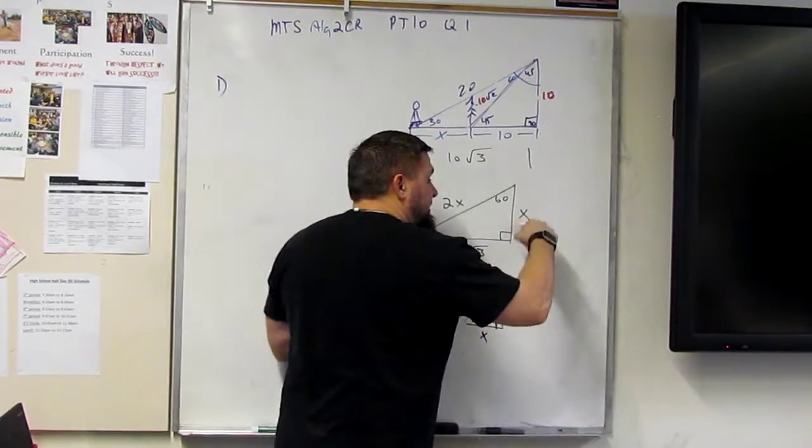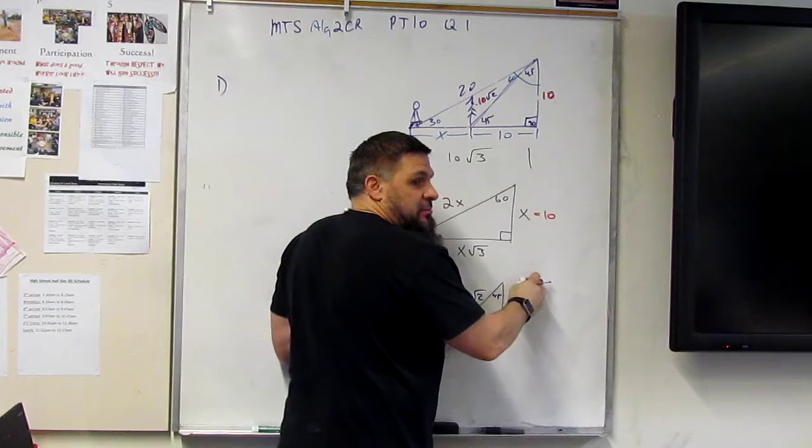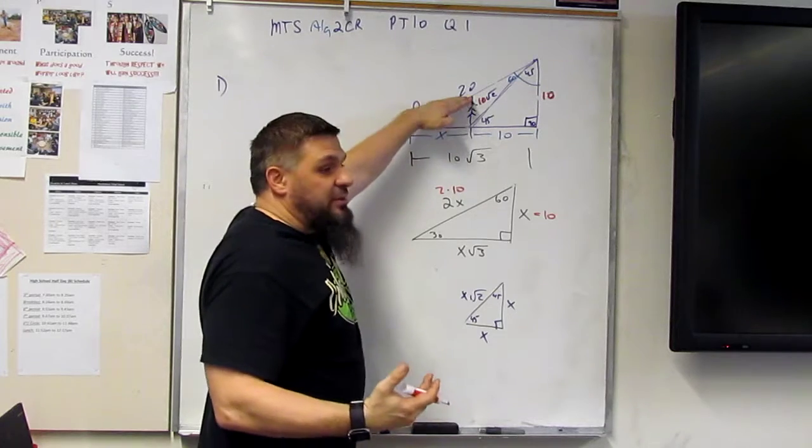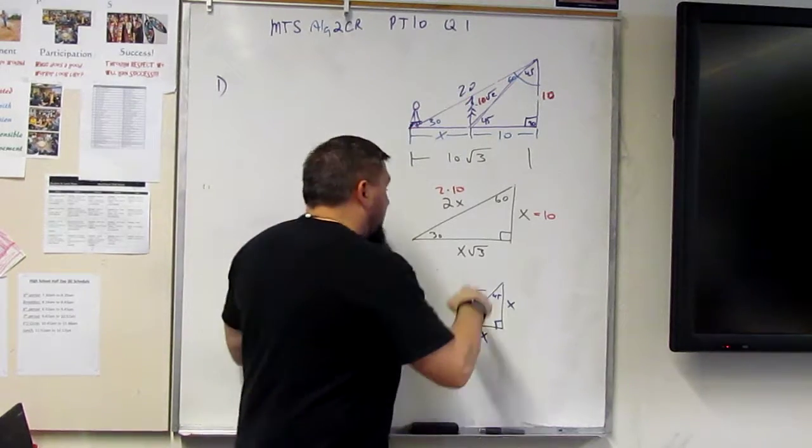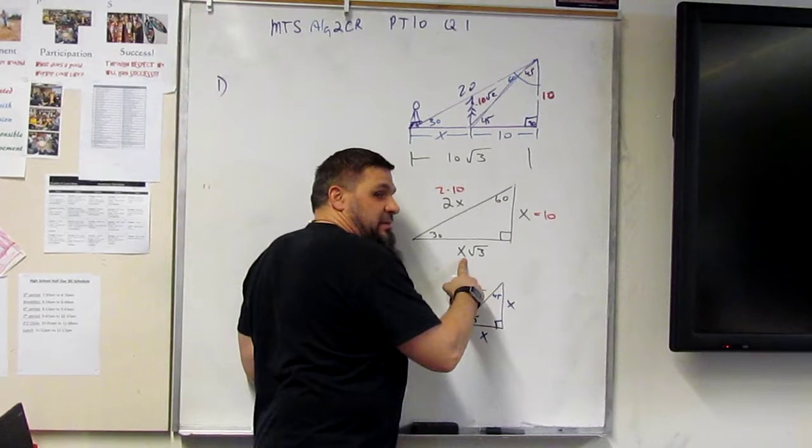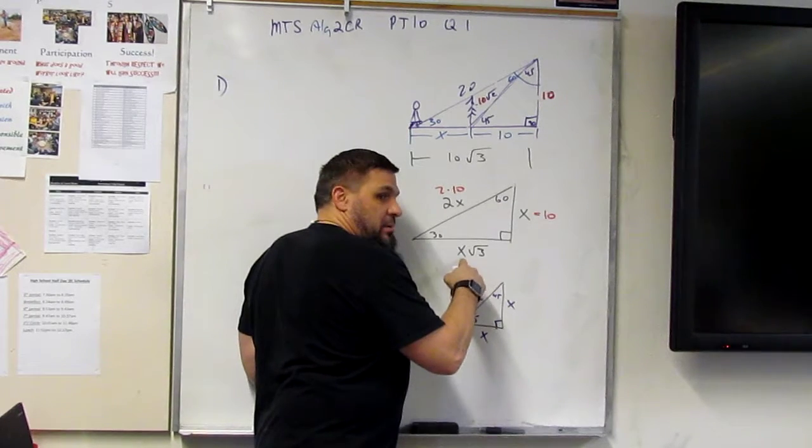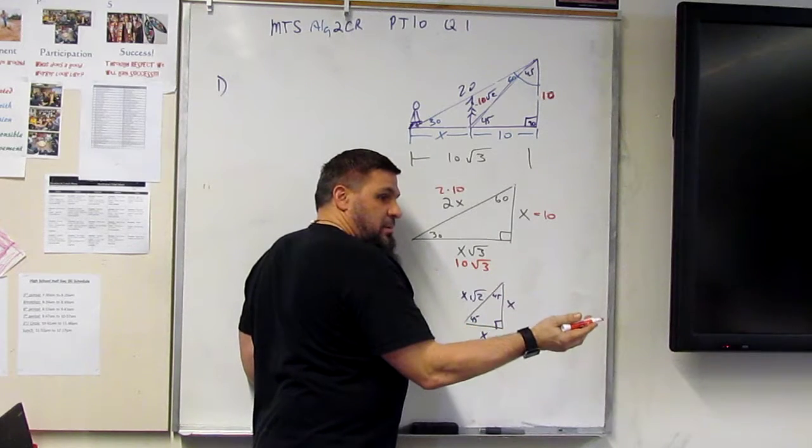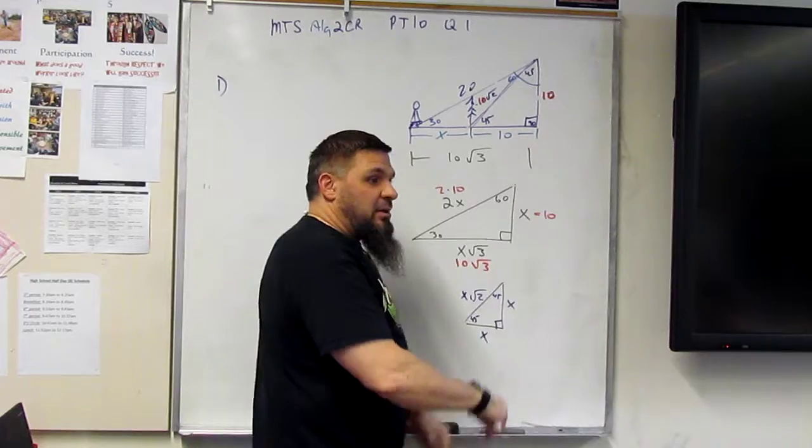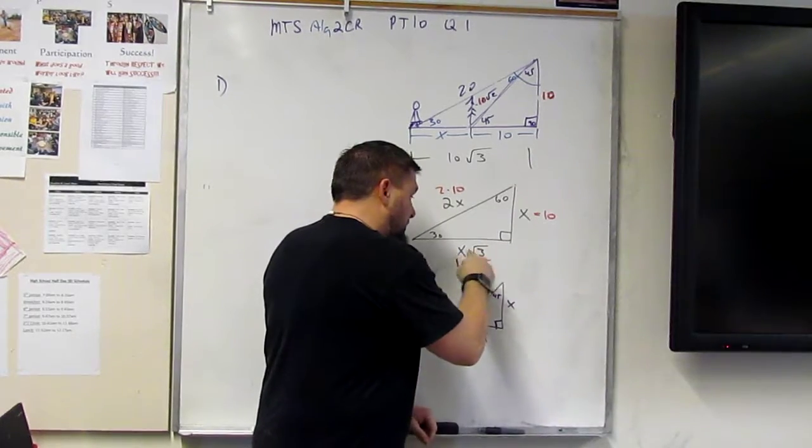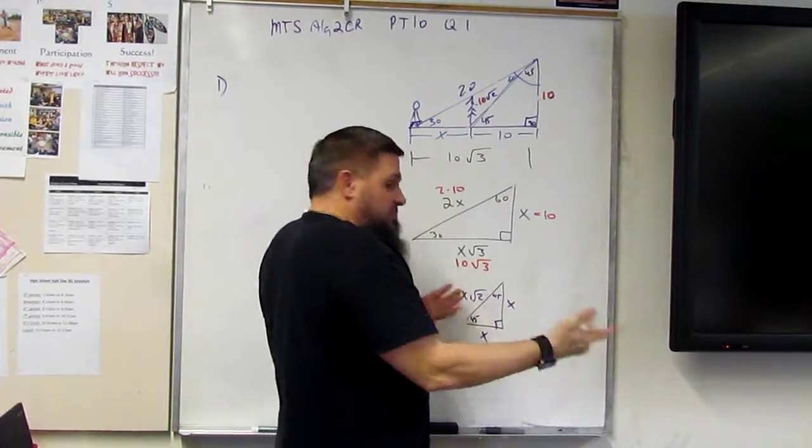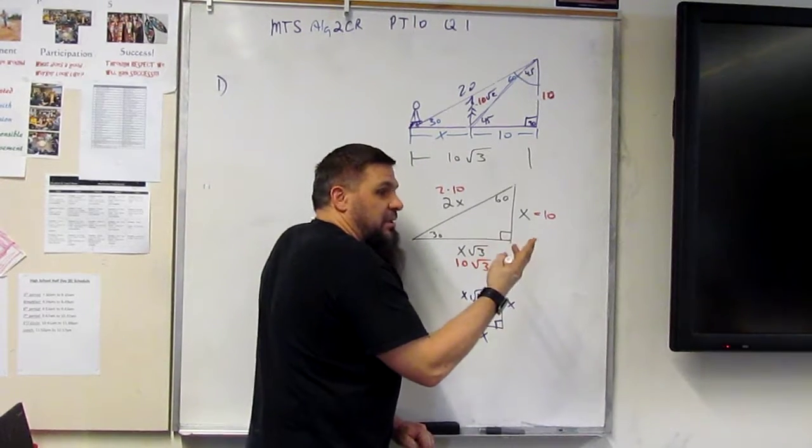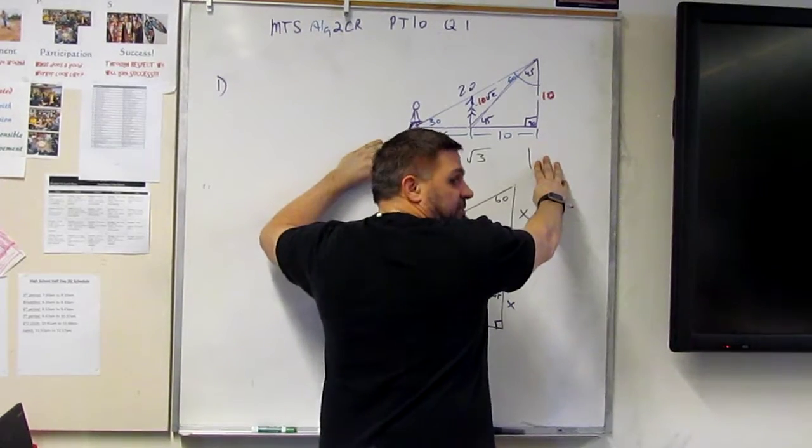Now, once we know what this is, if this is 10, then this long one is 2 times 10, which is how much? All right, then that's 20. But how much is this, if x is 10? 10 square root 3. That's what it is. Just like this is 10 square root 2, this is 10 square root 3. That's it. So this whole length is 10 square root 3.